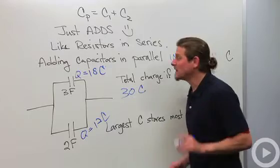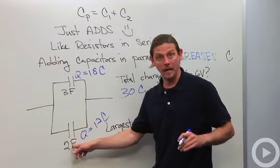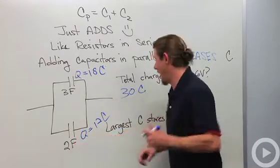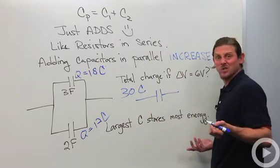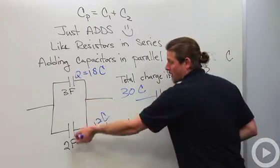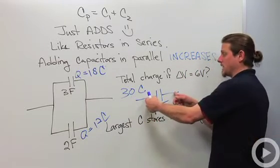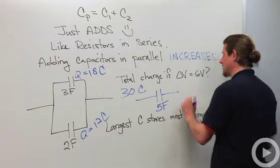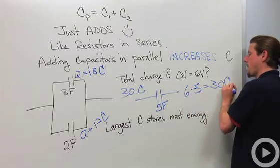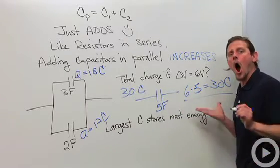All right, now, let's do it by adding them in parallel first. Well, I add them in parallel, and I say, you know what, I really just want to consider one capacitor with a capacitance of 5 farads. If the potential difference across it is 6 volts, much simpler.